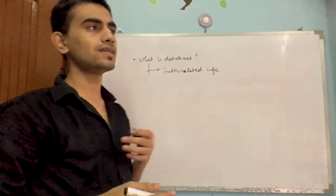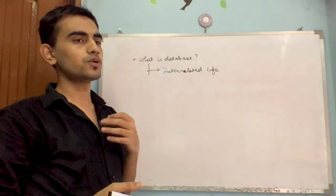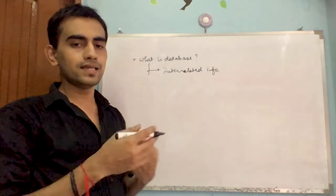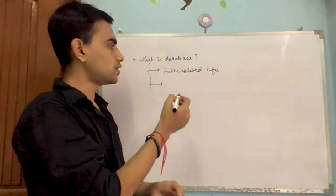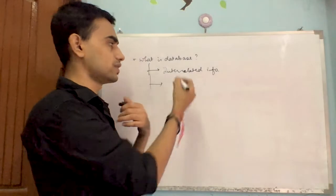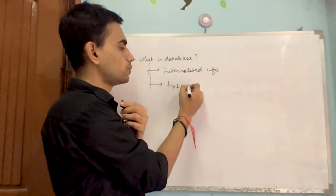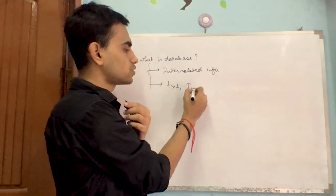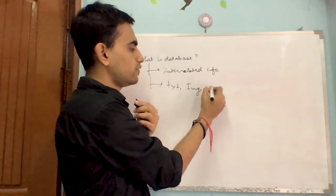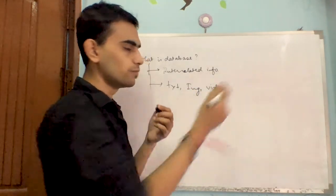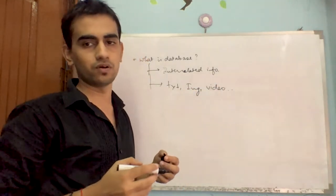When I say interrelated information, there could be many types — the data could be a text file, it could be an image, it could be video, and so on. There could be any number of types of data.